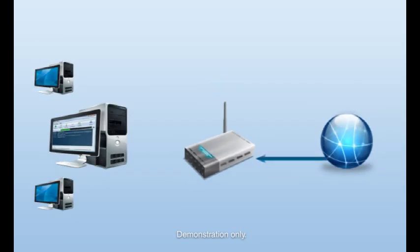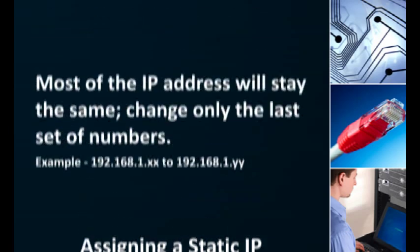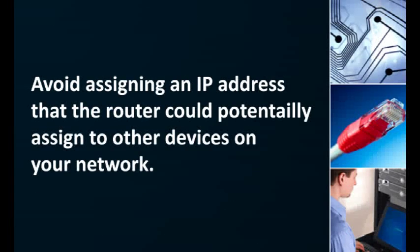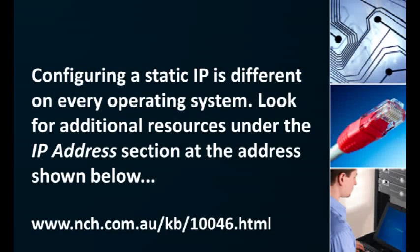When the time comes that you want to allow outside internet to connect to your application, the router needs to know which computer the application resides on in order to forward the connection to the correct computer. To ensure this happens smoothly each time, you need to assign a static IP address to this computer, and configure your router to forward outside requests for the application to the correct computer using the static IP address. When choosing the static IP address, keep a few things in mind: keep most of the IP address the same as the address assigned dynamically by the router, only changing the last set of numbers. Avoid assigning an IP address that the router could potentially assign to other computers or devices on your network, as doing so will result in no internet connection for either device. Also, make sure you don't assign the router's own IP address to your computer. Configuring a static IP is different on every operating system — you can find resources under the IP address section at the address shown on your screen.